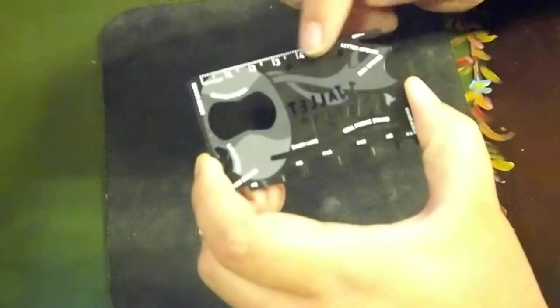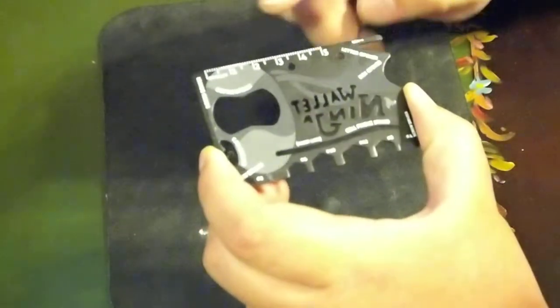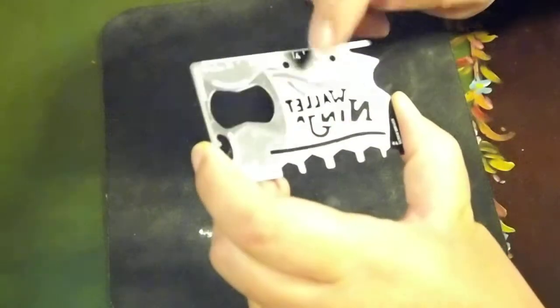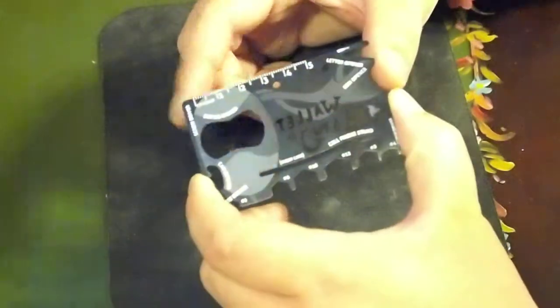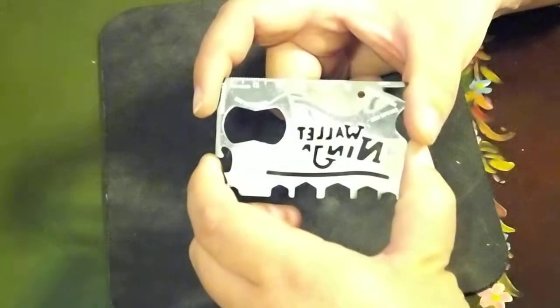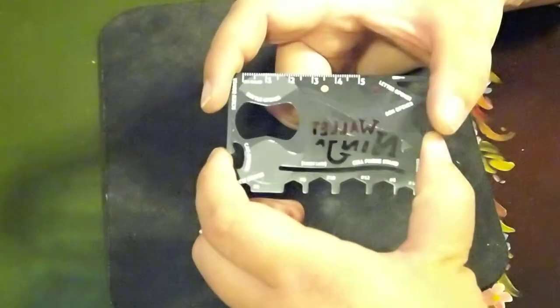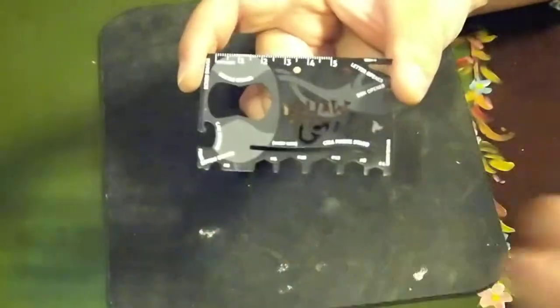And it's got a couple holes in here for a lanyard. So if you want to throw a lanyard on it, you can. And that's it. So get your Wallet Ninja today before I run out. Thanks for watching.